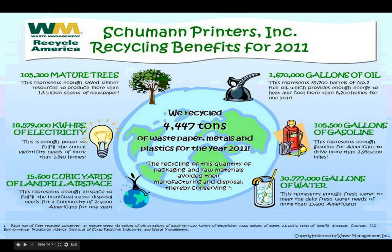This last slide shows recycling benefits for 2011. There were 152,000 mature trees saved, representing enough timber to produce more than 1.3 billion sheets of newspaper. We recycled 4,447 tons of waste paper, metals, and plastics in 2011. The recycling of this quantity of packaging and raw materials avoids manufacturing disposal, thereby conserving our natural environment, natural ecosystems, and our atmosphere. Recycling practices are becoming better.